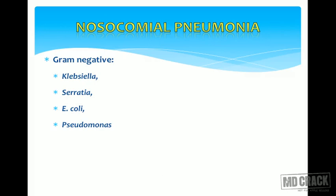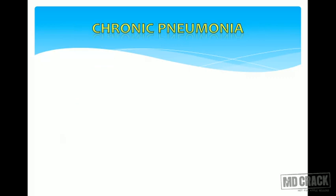Nosocomial pneumonias are most of the time hospital-acquired and most often due to gram-negative organisms. Klebsiella, Serratia, E. coli, and Pseudomonas are the most important gram-negative causes for nosocomial pneumonia. Sometimes these could be drug-resistant organisms carrying very high morbidity and mortality. Staphylococcus aureus is again very common, especially in patients admitted in cardiothoracic units, and can be a cause of nosocomial pneumonias.